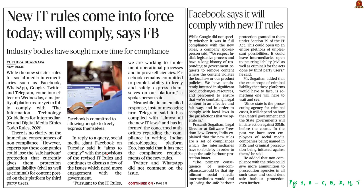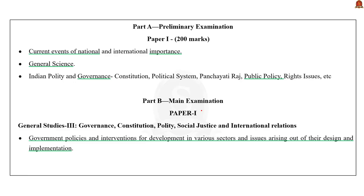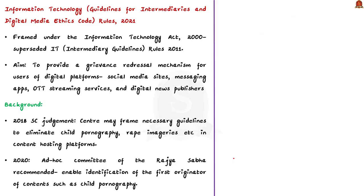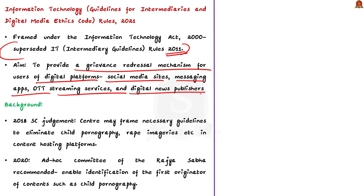Now let us take up this article regarding the recently introduced Information Technology Guidelines for Intermediaries and Digital Media Ethics Code Rules 2021. According to this article, Facebook has expressed readiness to comply with the rules. The IT Rules 2021 was framed under the Information Technology Act 2000, superseding the earlier IT Rules 2011. It mainly aims to provide a grievance redressal mechanism for users of digital platforms including social media sites, messaging apps, over-the-top streaming services and digital news publishers.